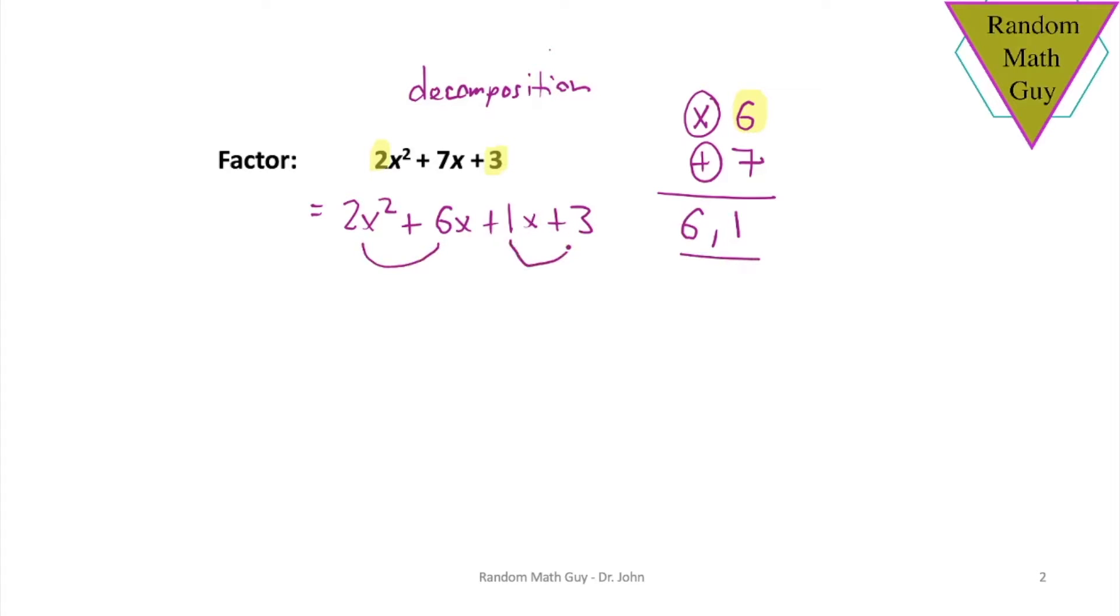This decomposition method requires us to split the middle term using the proportion 6 to 1. Now what you can do is group and complete the factoring as earlier. So in the first pair of terms, we can take out a 2x, leaving us with x plus 3. In the second pair of terms, the only number that is common to both is a 1, and we need that 1 there as a placeholder. Now we're in a position to complete the decomposition by seeing that x plus 3 is common to both of those terms. When you take out the x plus 3, there you have it, 2x plus 1. And this is the factor form. Remember, you can always check by expanding.